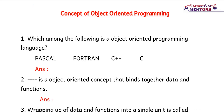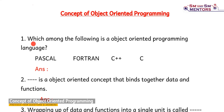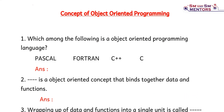Computer Science Second Chapter: Concept of Object Oriented Programming. In this chapter, we are going to discuss this topic. Programming languages are two types: Procedure Oriented and Object Oriented.